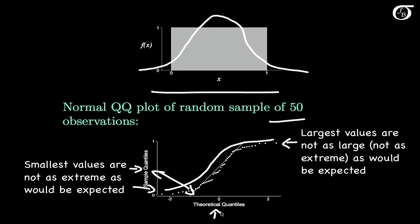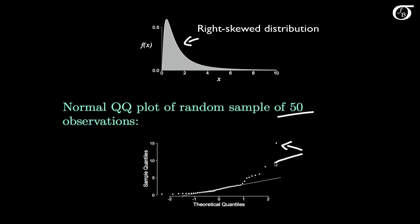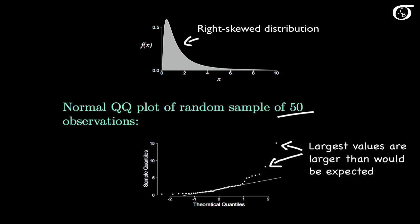Here I'm drawing 50 observations from a distribution that is strongly right skewed. What we see in the normal quantile-quantile plot is that the largest values in our sample are much larger than would be expected under normality, because of this heavy right tail. But in the left tail, the dots creep above the line, indicating that the smallest values are not as extreme as would be expected under normality — consistent with the PDF ending quickly at 0.